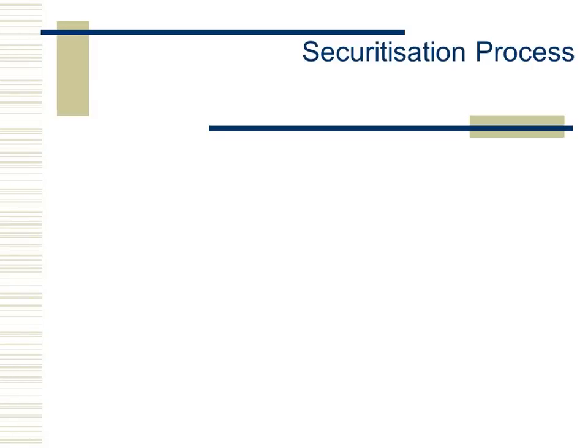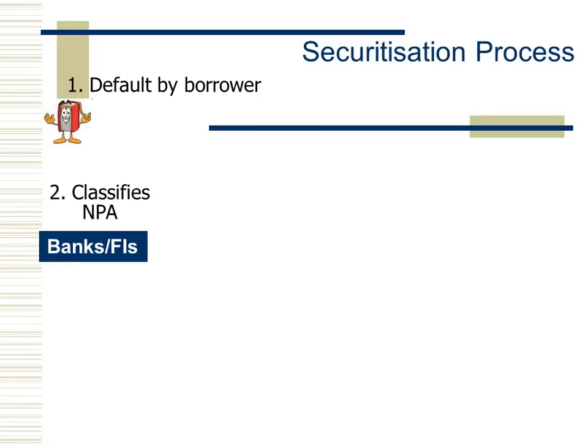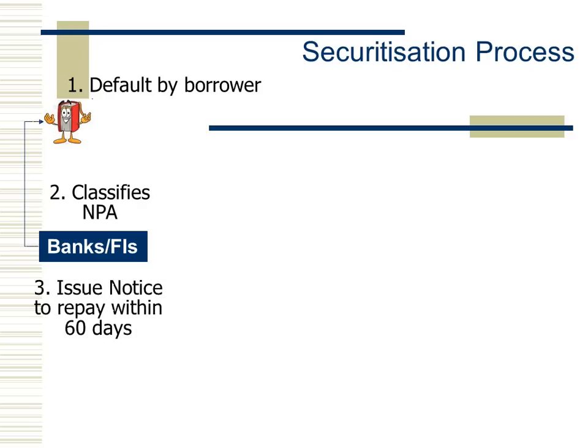The securitization process goes like this: when a default is made by a borrower — a person who receives a loan from a bank or financial institution — the bank classifies the account of the defaulting borrower in their books as a Non-Performing Asset (NPA). This is as per the prudential norms issued by RBI. At present, the moment the interest or principal component is in default for more than 90 days, the account is classified as an NPA. Once the classification is made, the bank serves a notice to the defaulting borrower within 60 days under Section 13.